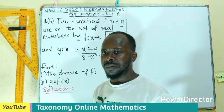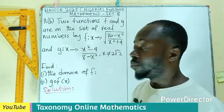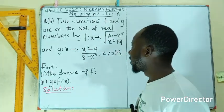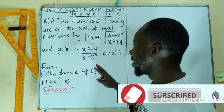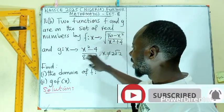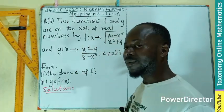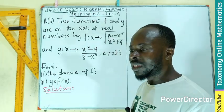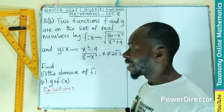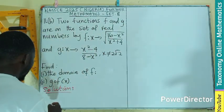Welcome to the continuation of question 11. Today is 11b. Two functions f and g are defined on the set of real numbers. We are to find the domain of f and then find the composite function g of f.